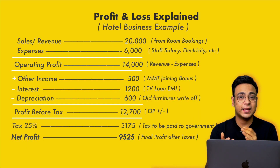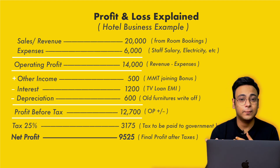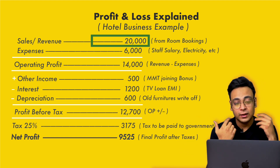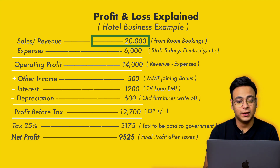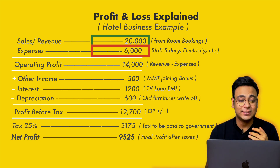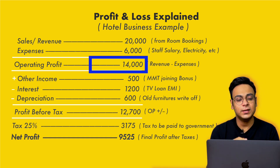Let me show you an example of a company and how the profit and loss statement works. We are taking a hotel business as the example. Let's say this hotel has sales or revenue of 20,000 every year from room bookings. The expenses the hotel has to pay to its staff and electricity is 6,000. So if we deduct the expense from the revenue, we get the operating profit of the company — which is 14,000.